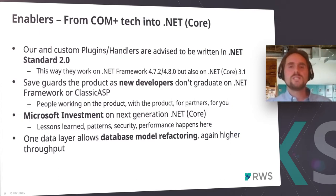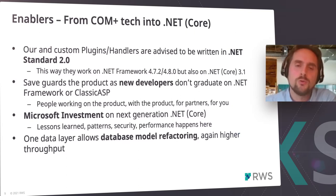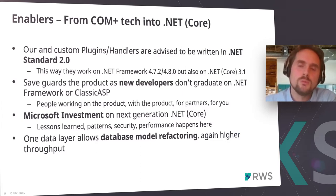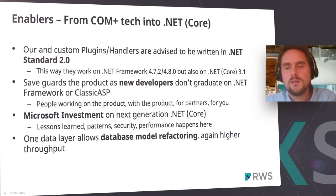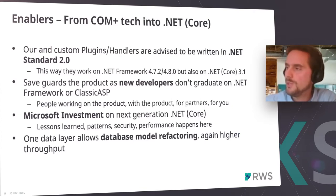If we strip the COM+ data layer — because everything on our end becomes .NET Framework and in turn .NET Core — then we actually have one data layer. That would also allow some database model refactoring so we can optimize our database. With the current two data layers, any changes are more expensive to make.